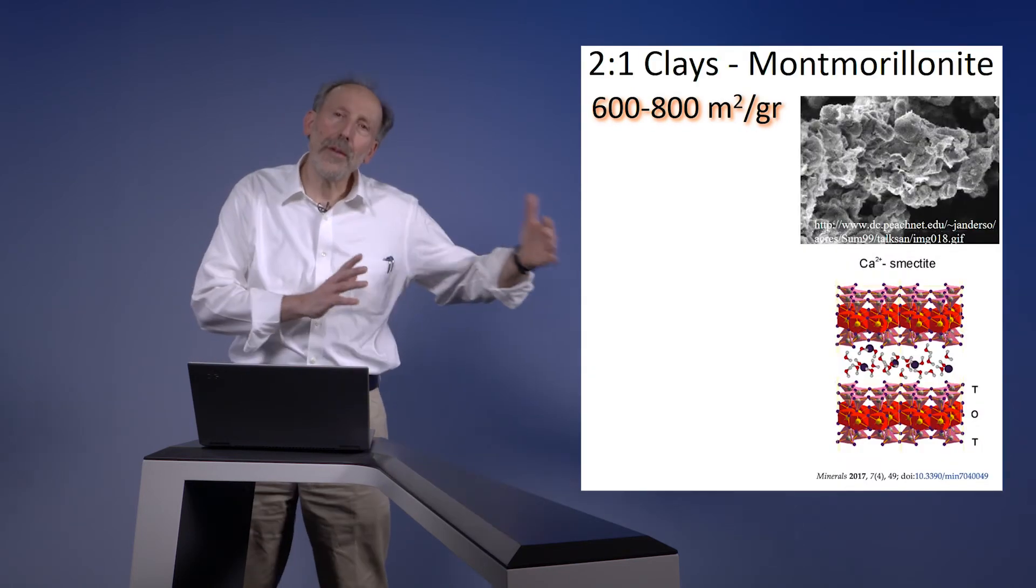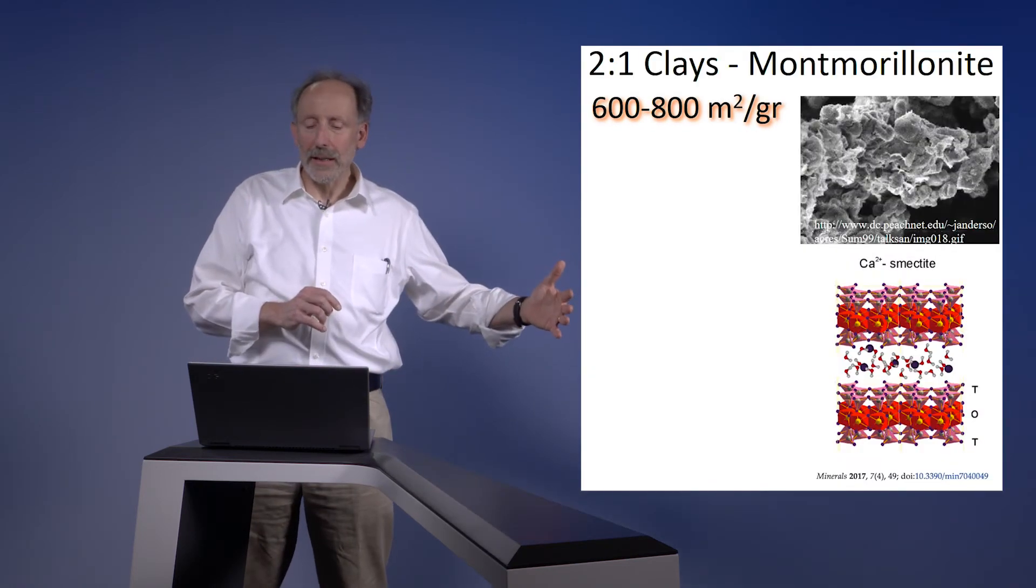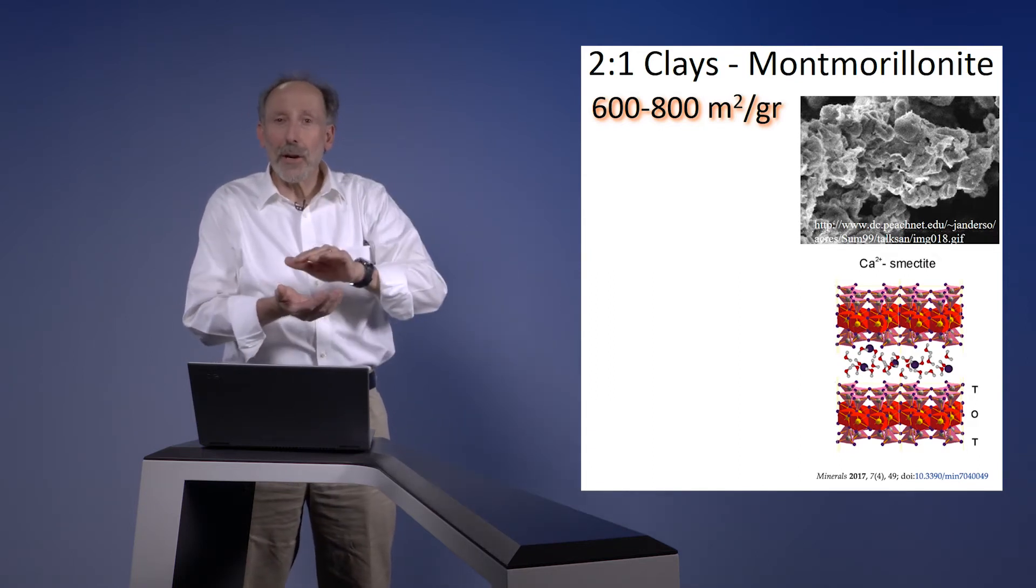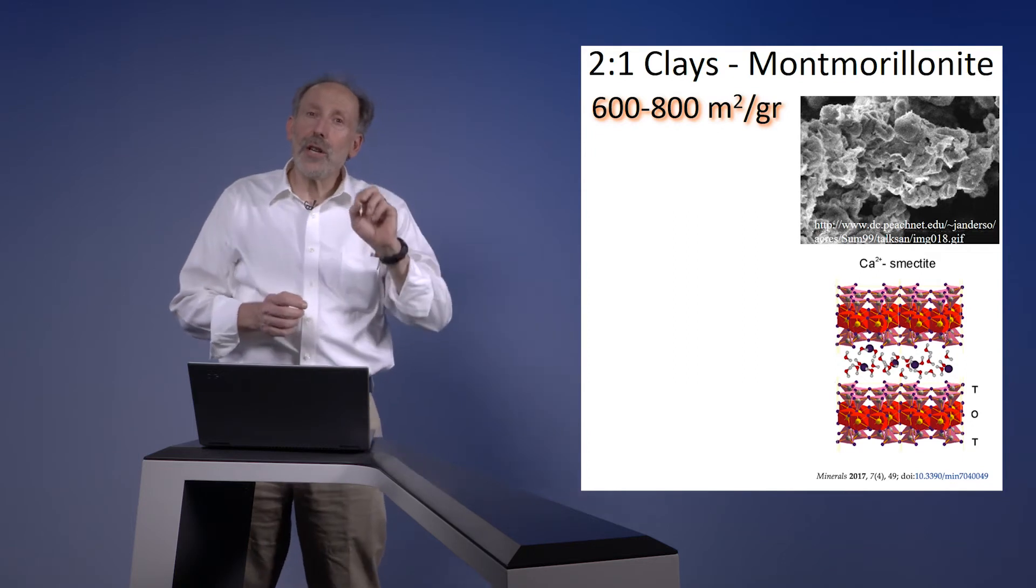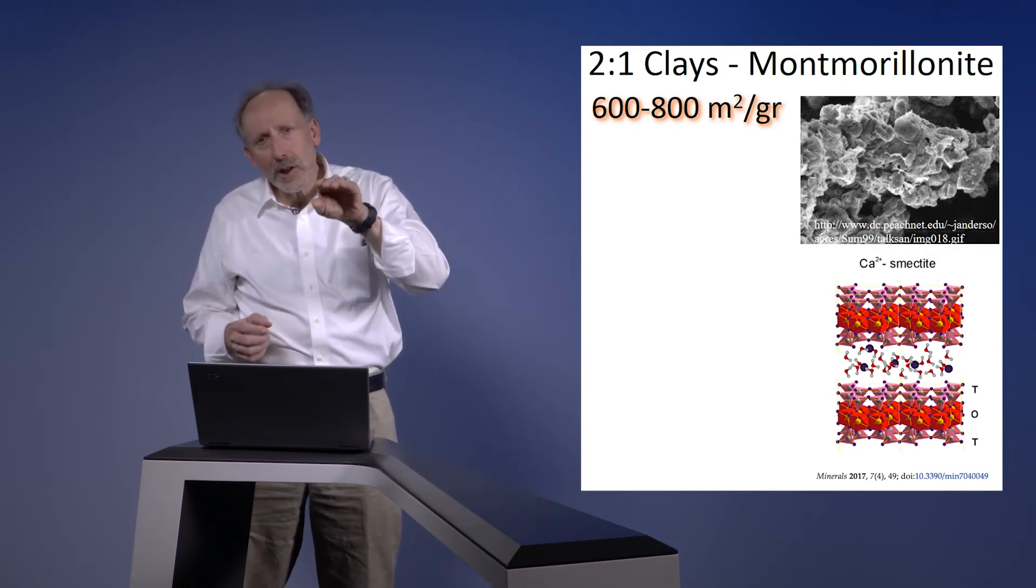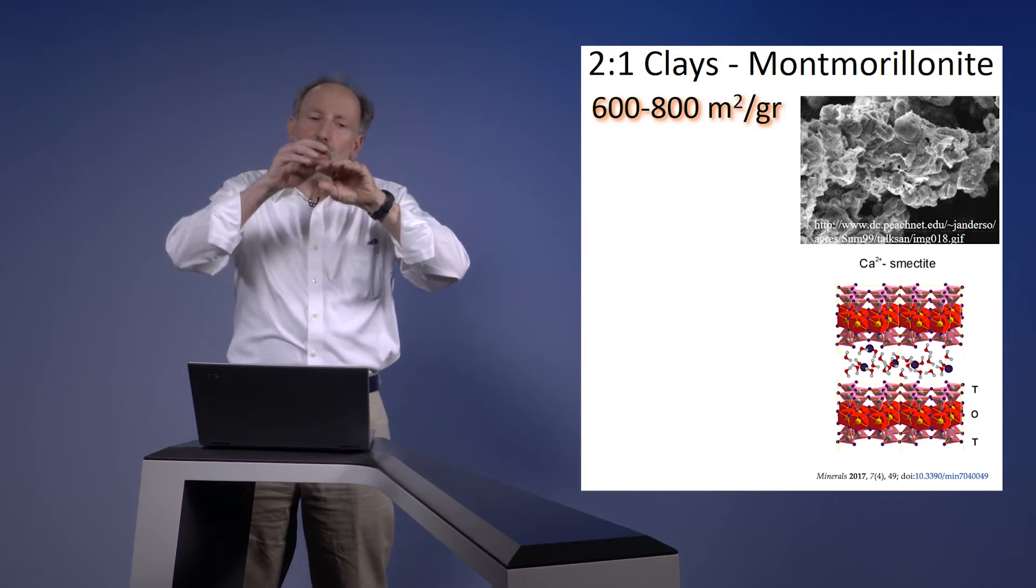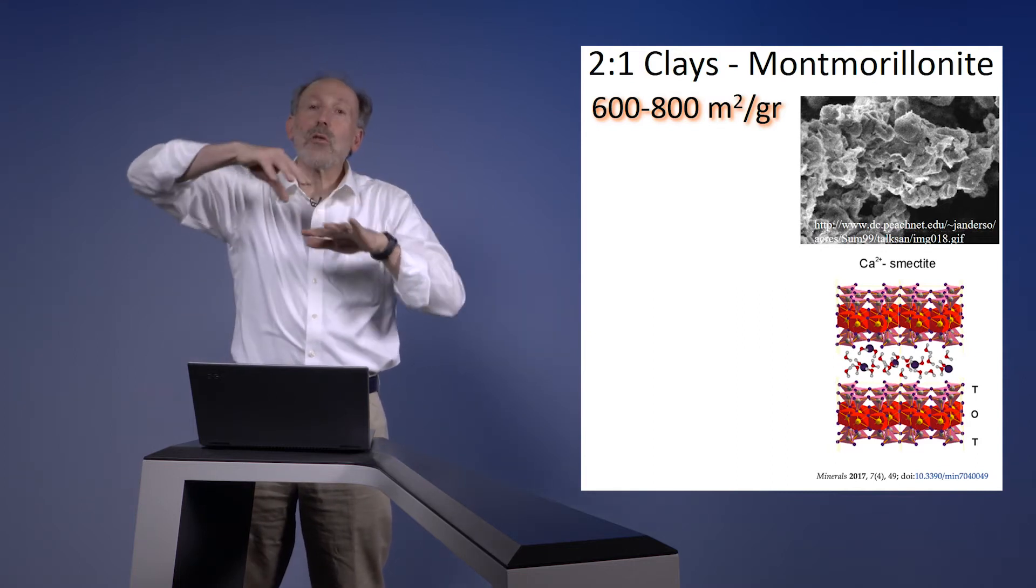At the far other end of the spectrum is montmorillonite. Montmorillonite is a two-to-one clay, so it has tetrahedra, octahedra, tetrahedra. But the charge is all in the octahedra, in the middle of the sandwich, and that means that the charge felt on the outside of the sandwich is quite diffuse.